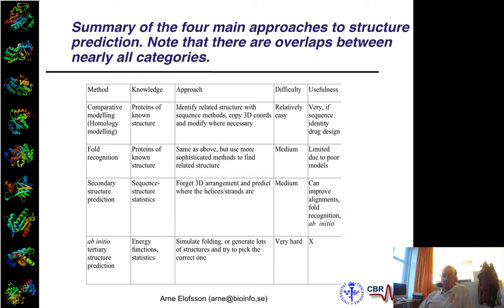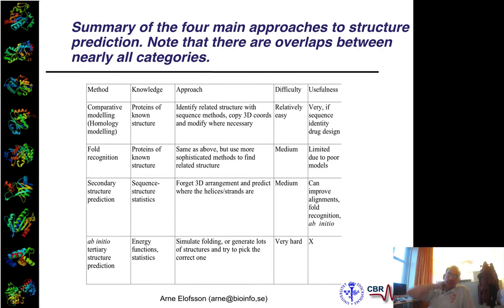Then we talked about secondary structure features, which basically step away from full 3D structure prediction and instead predict secondary structures — whether a region is a helix, loop, or sheet. That's what we'll talk about today. It's useful in some senses, particularly maybe for membrane proteins, but it's also useful as a tool for other areas.